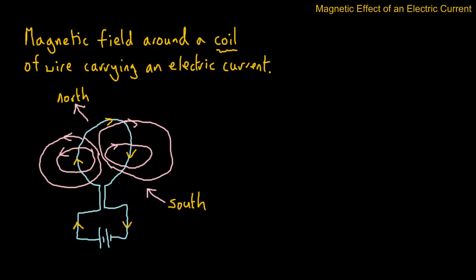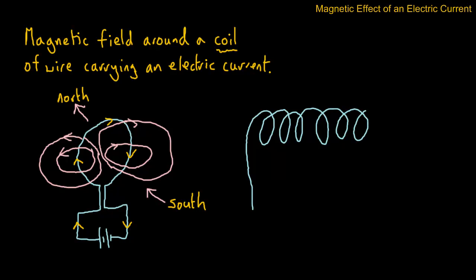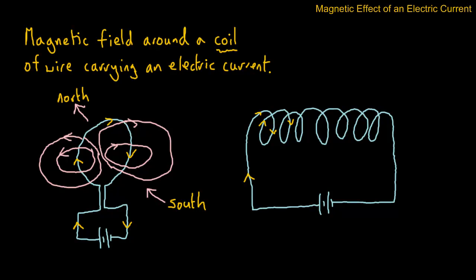Now if we take more than one coil — a number of coils — and of course we connect the battery. Again the question is which way is the conventional current flowing? It always flows away from the positive end. So the conventional current goes up here, down, down here, up here, down here, down here, and so on.